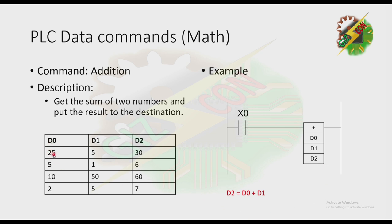Looking at the table: D0 is 25 and D1 is 5, so D2 becomes 30. Then 5 and 1 gives 6. Then 10 and 50 gives 60. And 2 and 5 gives 7. That's how the addition command works.